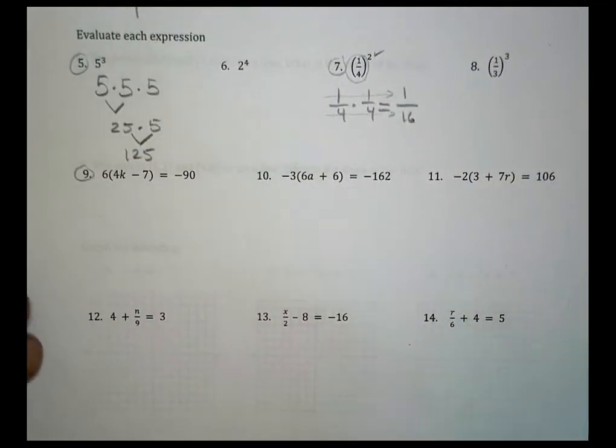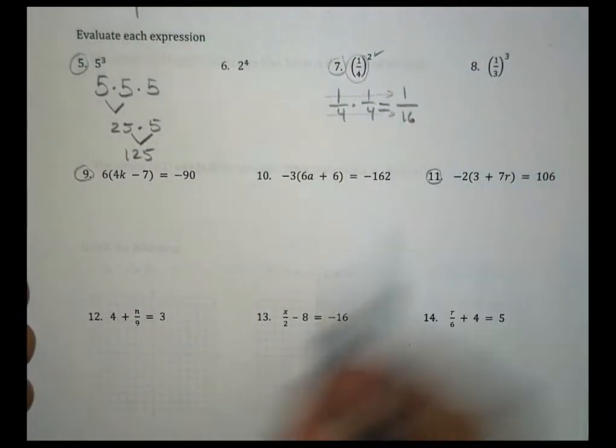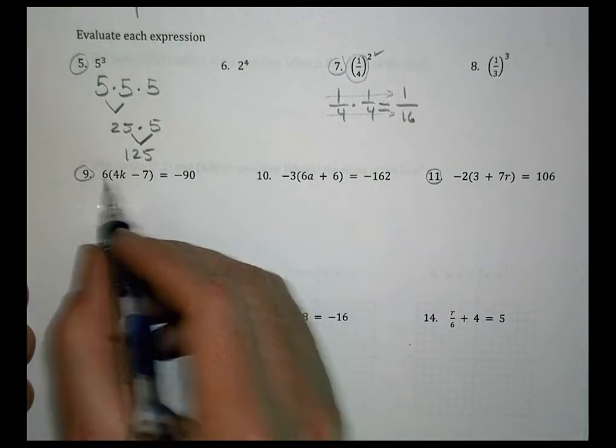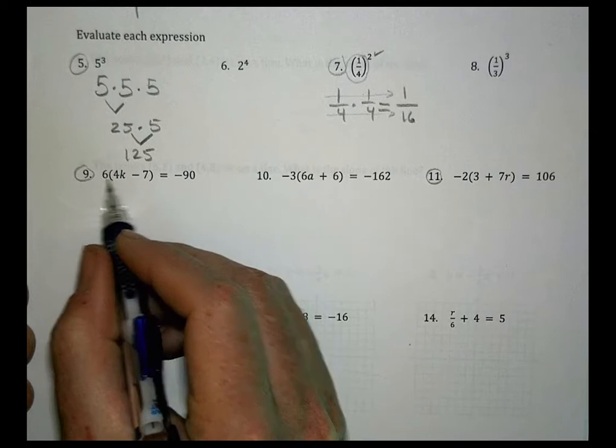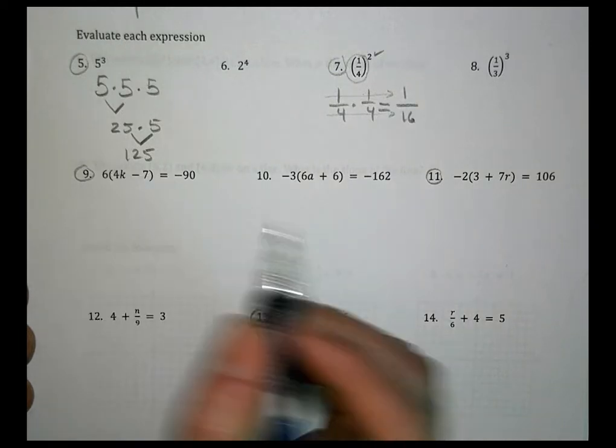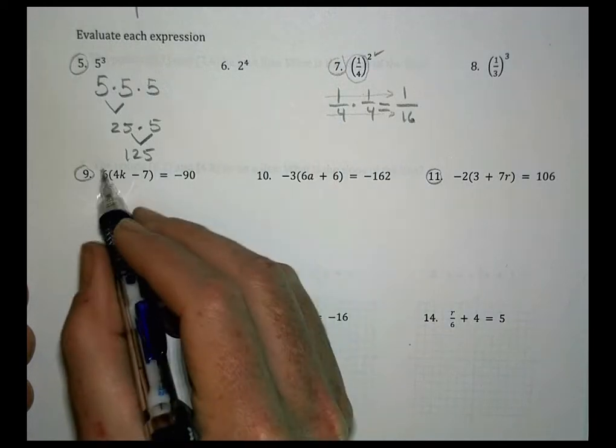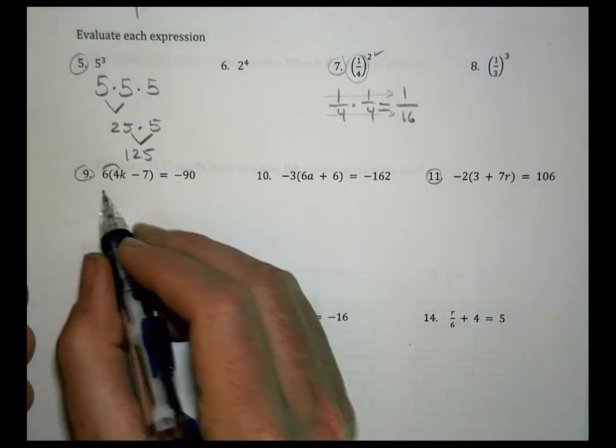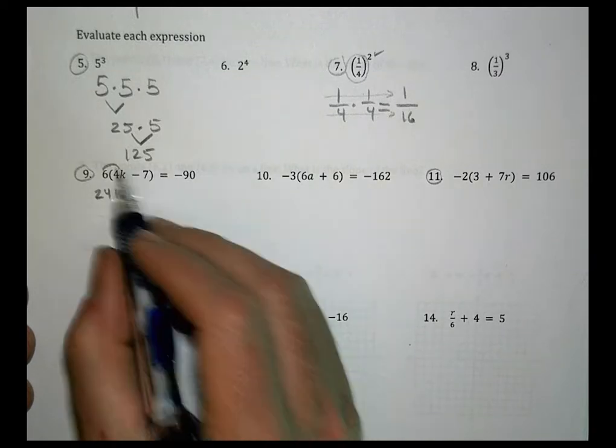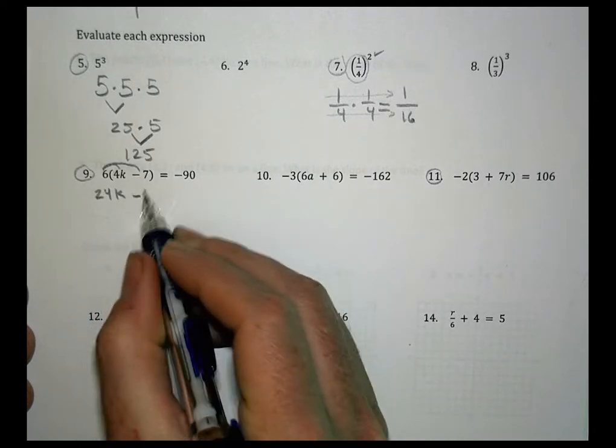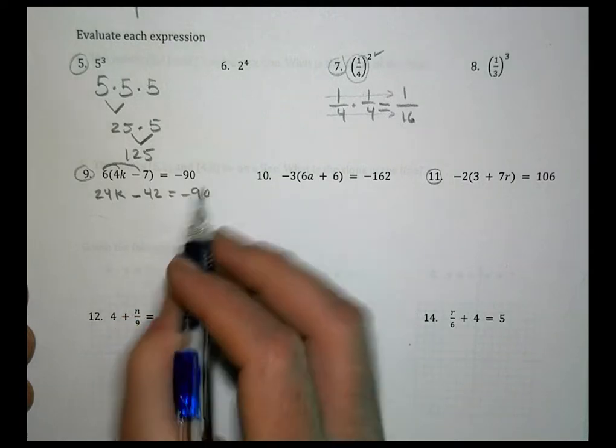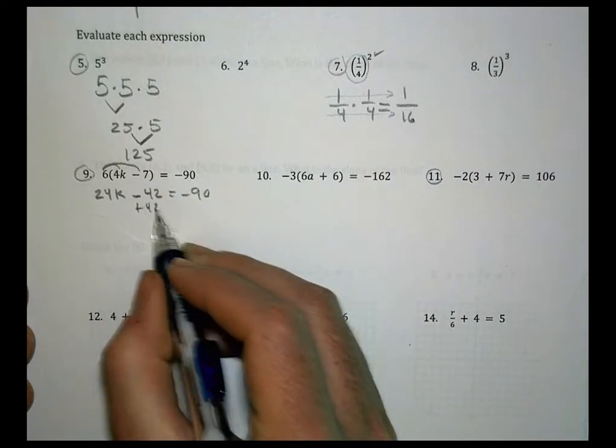Alright, down below, I have some review here basically. Looking at 9, 11, and 13. For number 9, we can either divide both sides by 6 to start with, or we can distribute by placing that inside of here. Let's go ahead and do distributing first. So 6 times 4 is 24k, and then 6 times negative 7 is negative 42, equals negative 90.